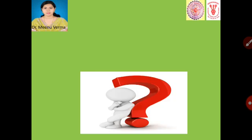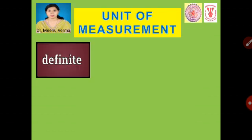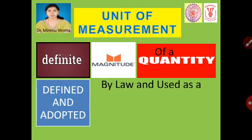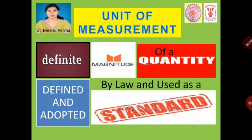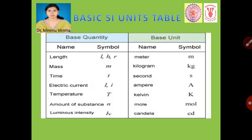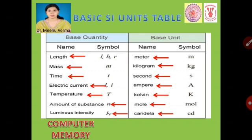Now we will learn what is a unit of measurement. A unit of measurement is a definite magnitude of a quantity, defined and adopted by convention or by law, and used as a standard for measurement of the same kind of quantity. For example, we can measure length in meter, weight or mass in kilogram, time in second, electric current in ampere, temperature in kelvin, amount of substance in mole, and luminous intensity in candela. Similarly, computer memory can be measured in bit.